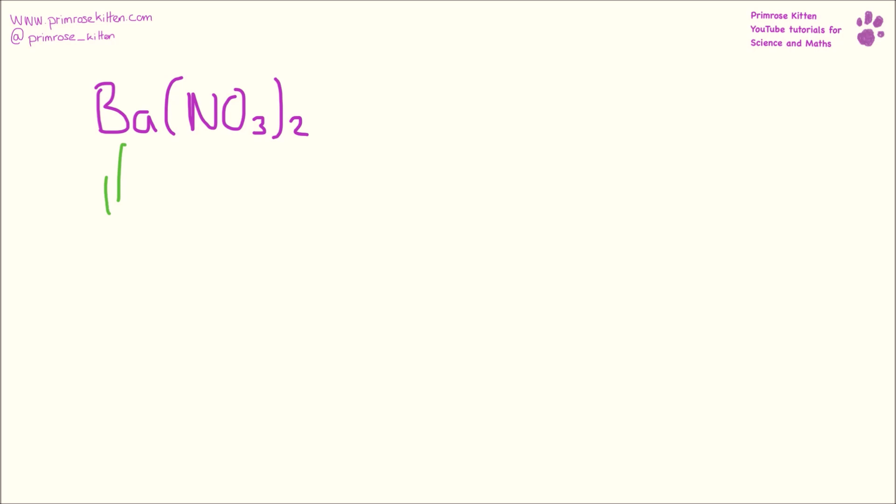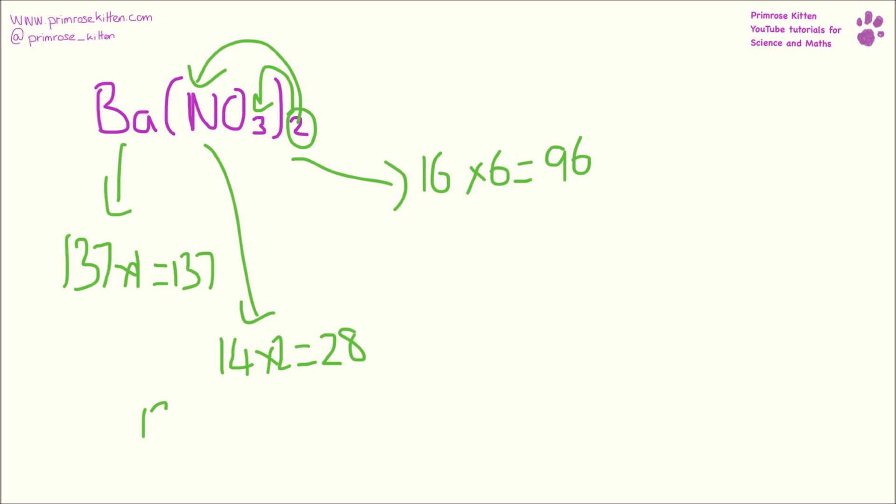Here we have barium nitrate. Barium has a mass of 137, and there is one, giving us a total of 137. Nitrogen has a mass of 14, and there are two of them, giving us a total of 28. Oxygen has a mass of 16, and there are six of them, giving us a total of 96. So 137 plus 28 plus 96 gives a total of 261.